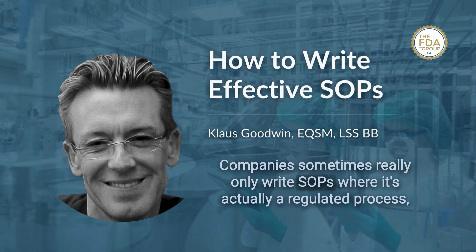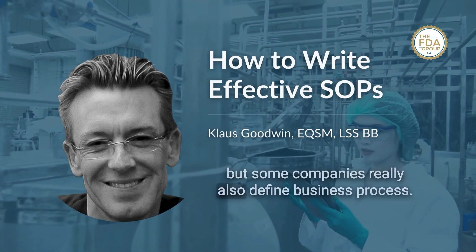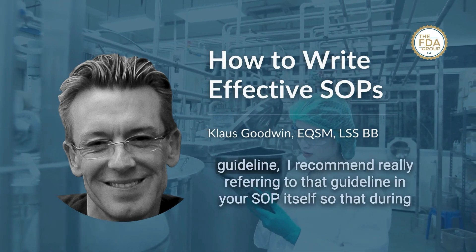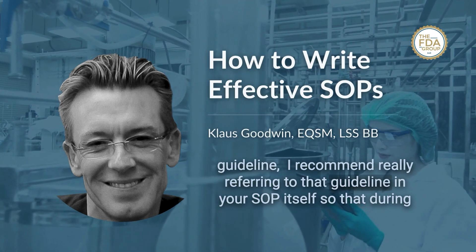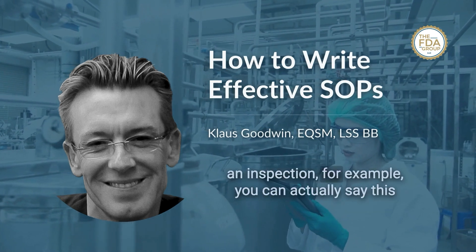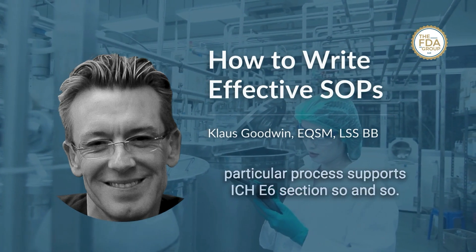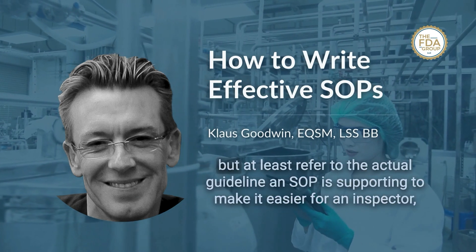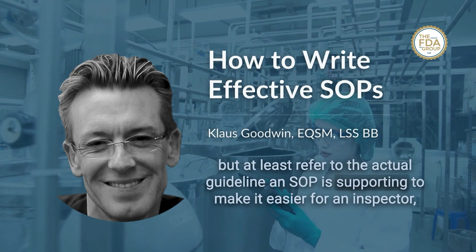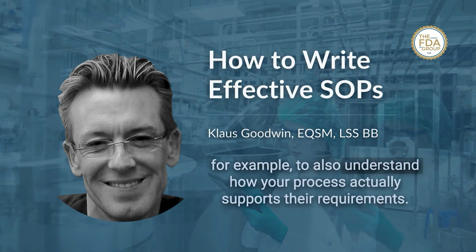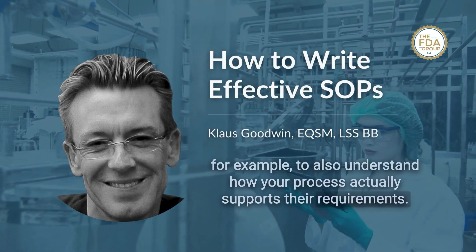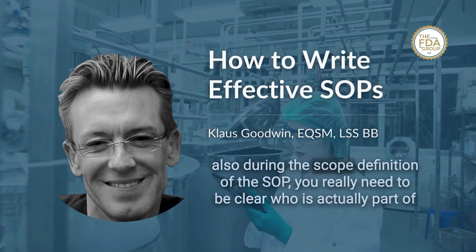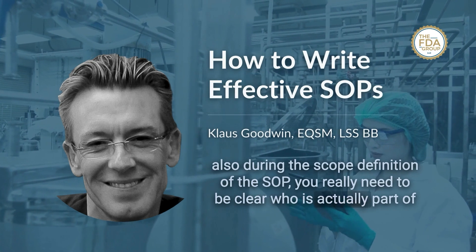Some companies only write SOPs for regulated processes, while others also define business processes. If a process supports a regulation or guideline, I recommend referring to that guideline within the SOP itself, so that during an inspection you can say 'this process supports ICH E6, section so and so.' You don't necessarily have to reference the specific section since guidelines change, but at least refer to the guideline the SOP is supporting, making it easier for an inspector to understand how your process meets their requirements.